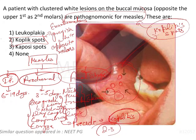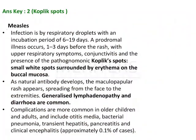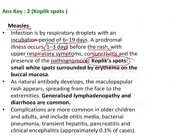The pathognomonic feature of measles is Koplik's spots. The incubation period is 6 to 19 days; the prodromal phase can be 2 to 5 days and involves respiratory symptoms, skin rashes, conjunctivitis, and Koplik's spots. Koplik's spots are small white or grayish-white spots surrounded by erythema on the buccal mucosa.